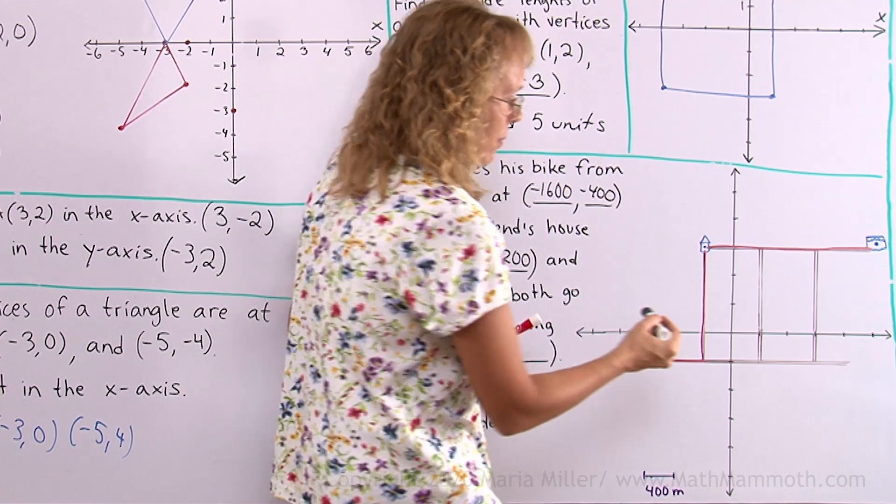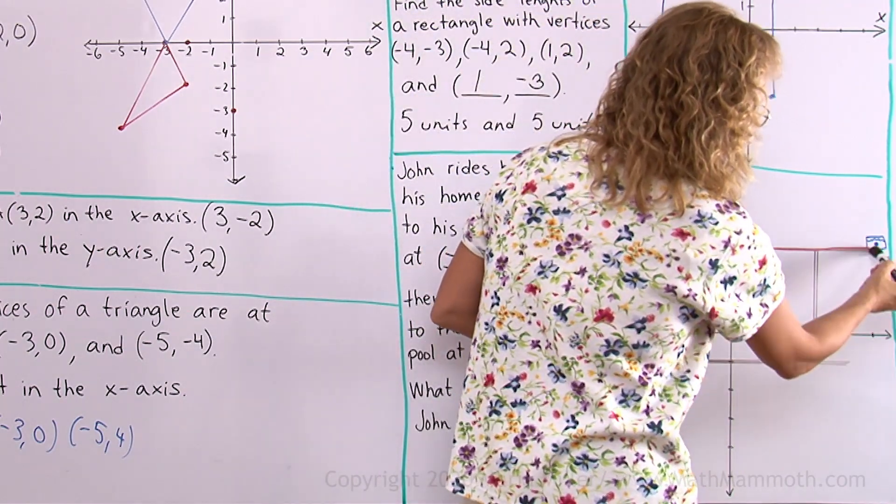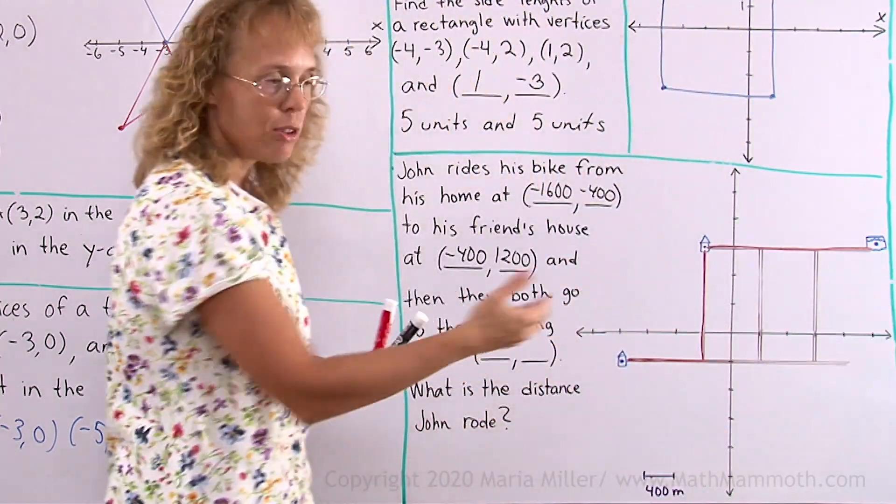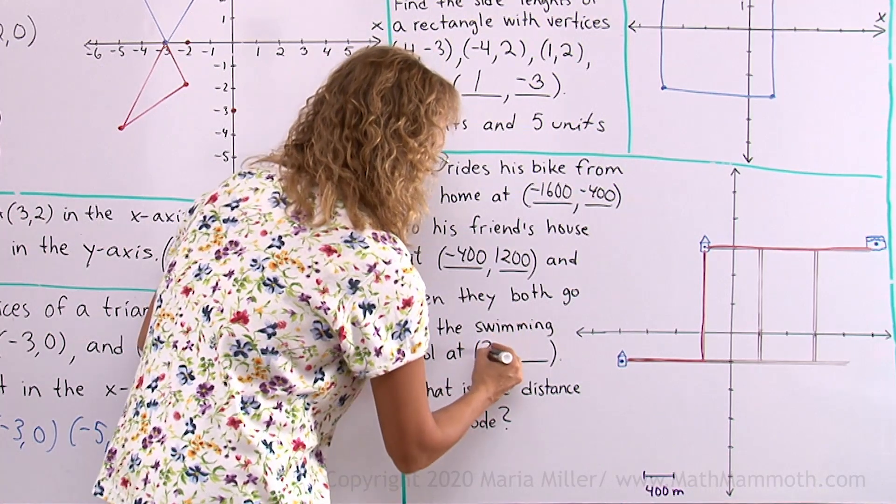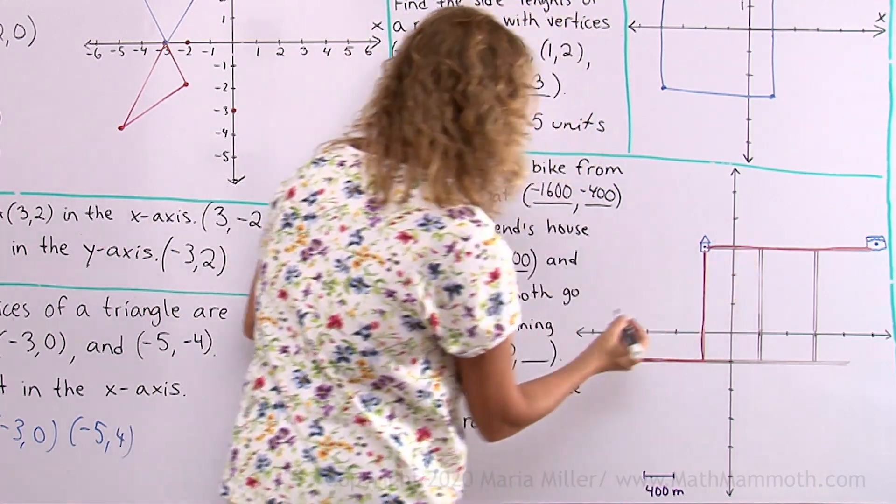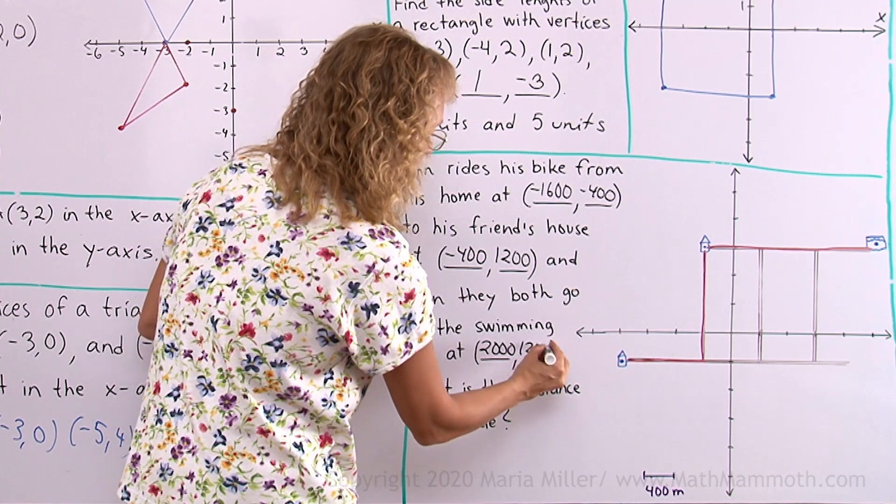And swimming pool. One, two, three, four, five. Swimming pool is at five positive units, which makes it 2000. And then the same three positive y units.